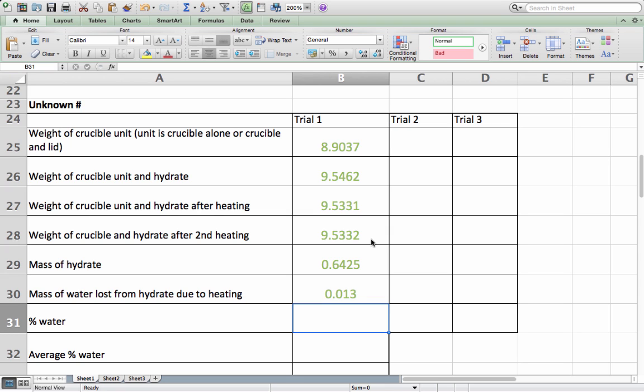To calculate the percent water of my hydrate, I simply divide the mass of water by the mass of hydrate, and multiply by 100 to give a percentage. So, I can conclude that my hydrate is 2.02 percent water. I would then repeat this process 2 more times, and get the average percent water.